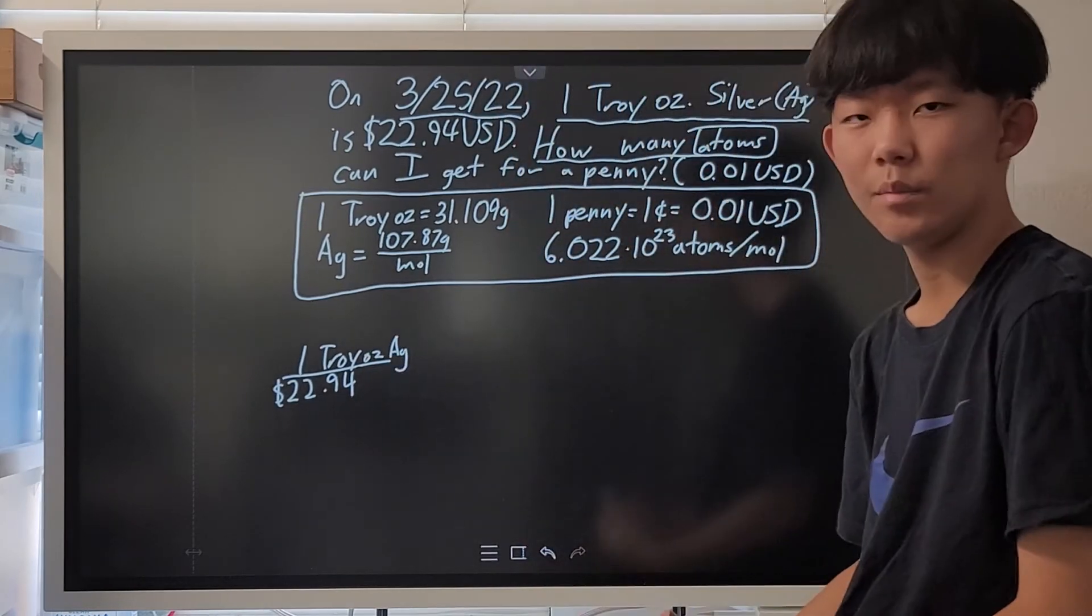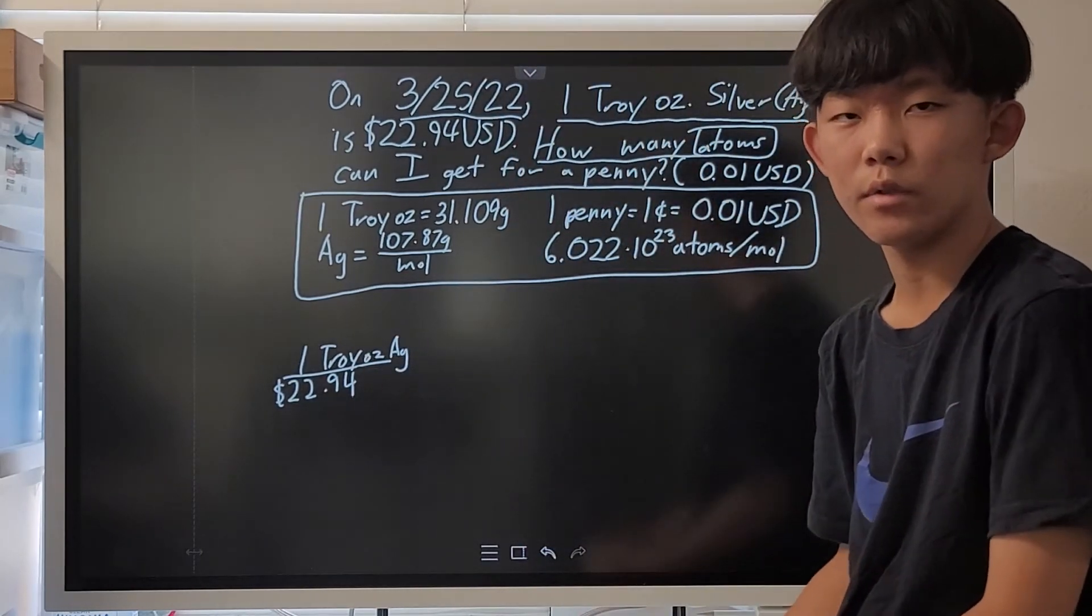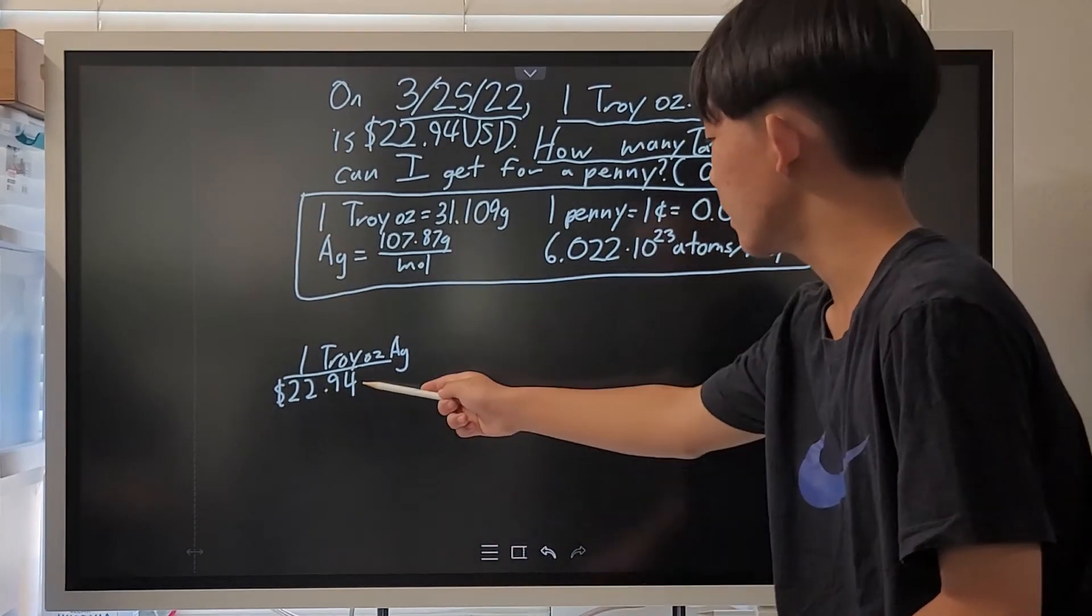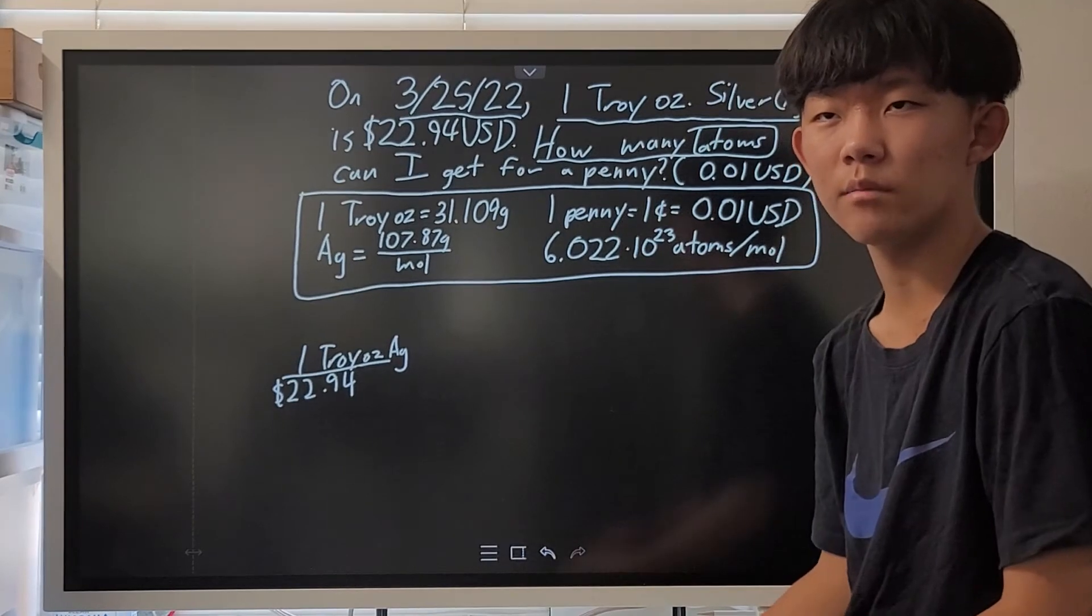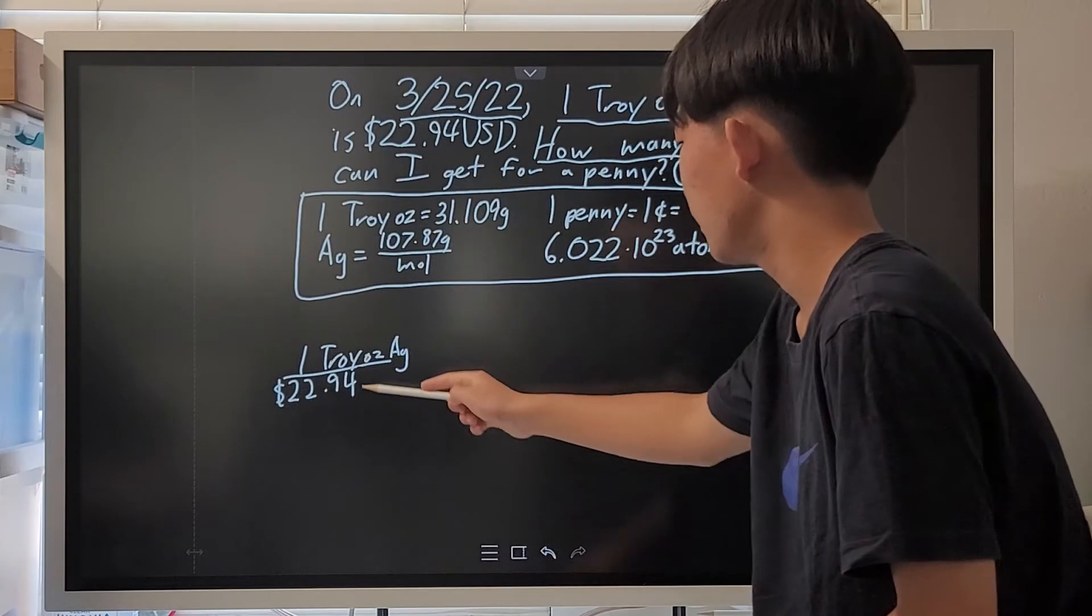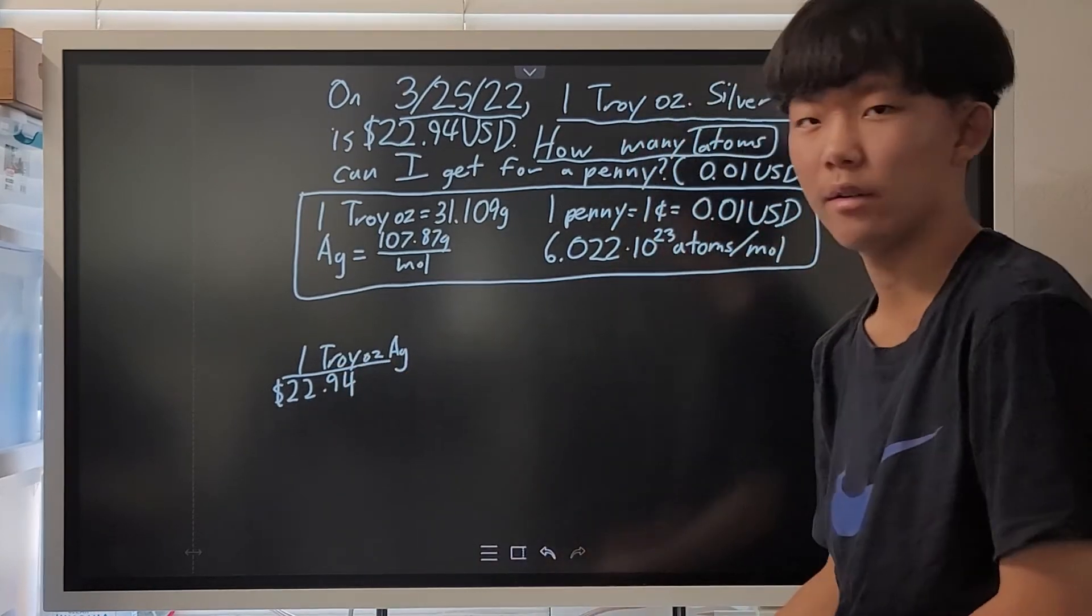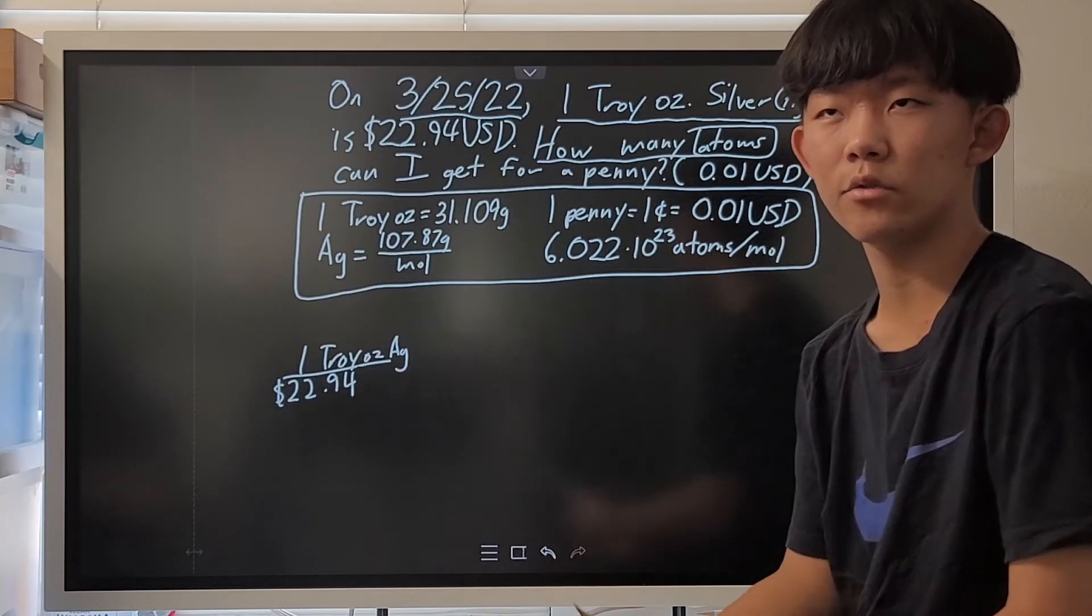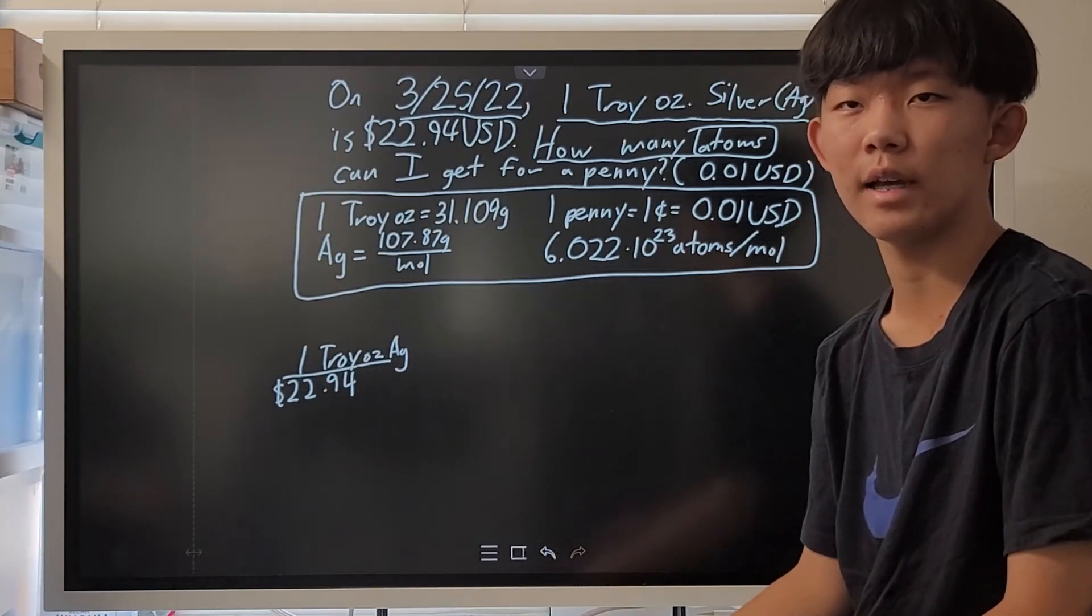So, this is the amount of silver we get for $22.94. But I want to have cents in the denominator, so I can get atoms per cent. That is why I put the weight quantity up and the money quantity down there, because the money quantity can be converted to cents, and the troy ounce can be eventually converted to atoms.